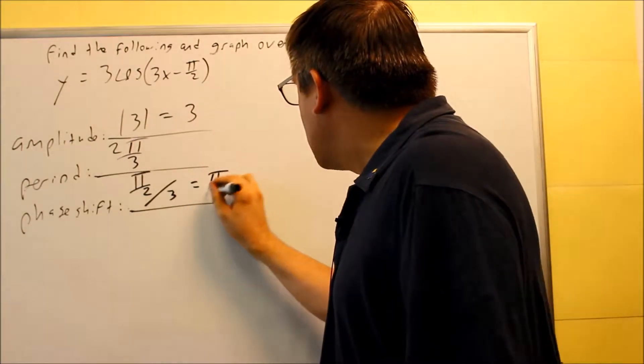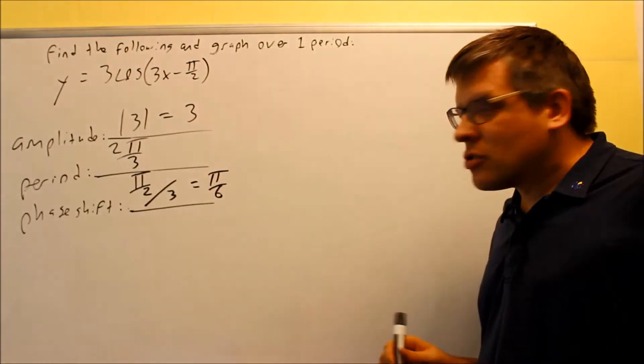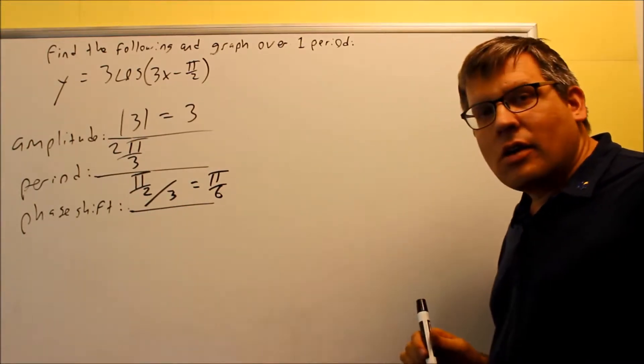If I simplify that, I get π over 6. So π over 6 is going to be my phase shift.